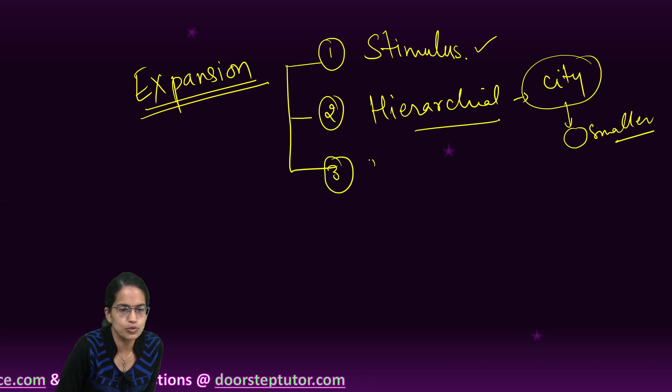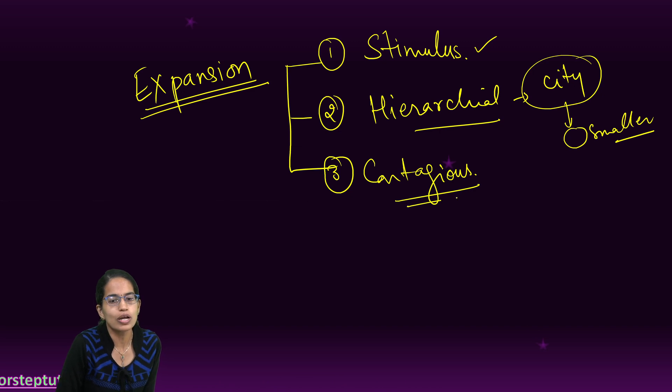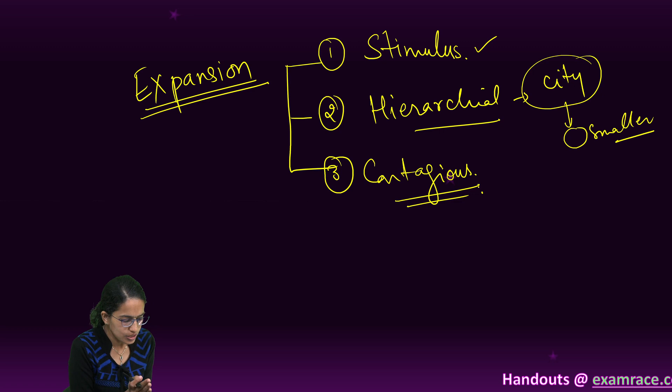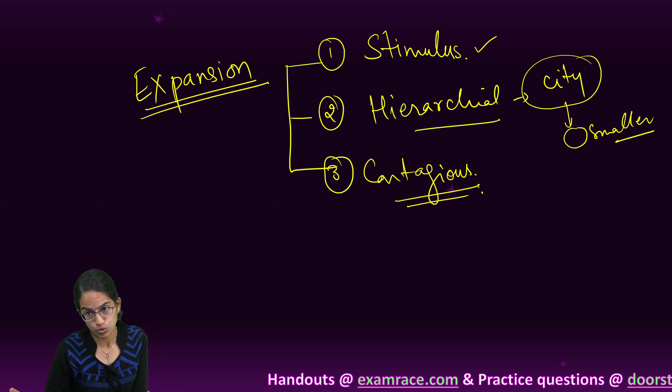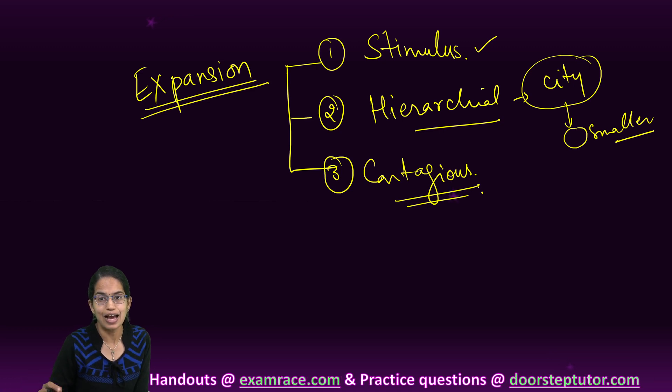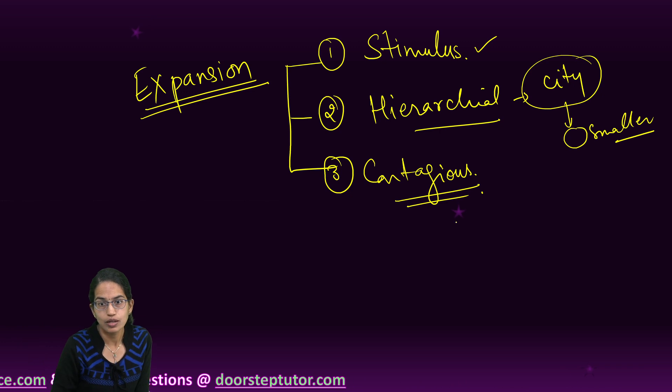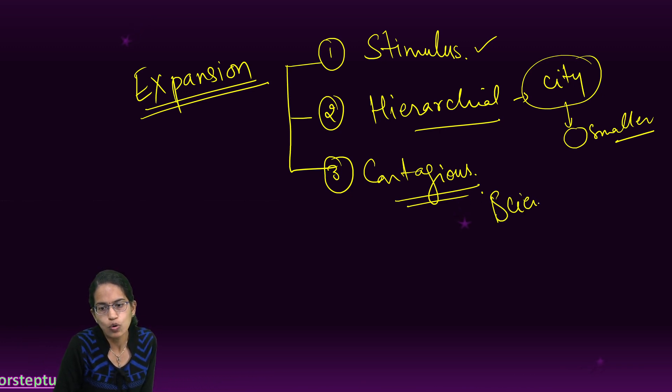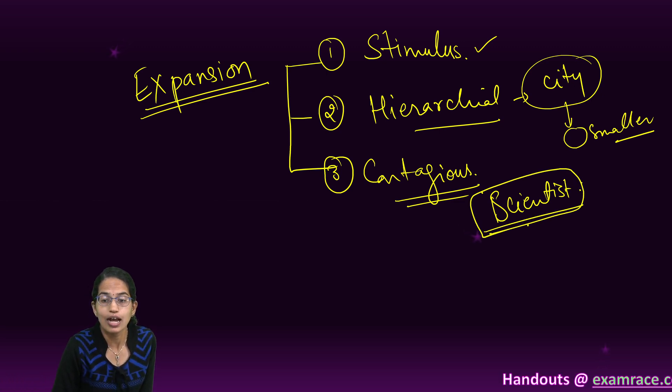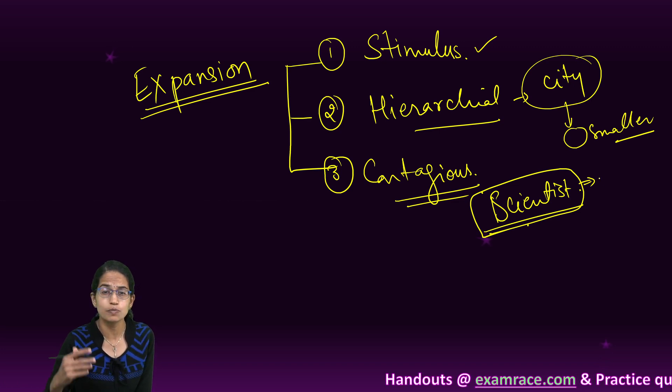The third form of diffusion is called contagious diffusion. Contagious diffusion is a form of diffusion where it usually occurs when a person moves to a new place. Let's say you have a very renowned popular politician or scientist who moves to a smaller town. This scientist has a habit of carrying a special pen.